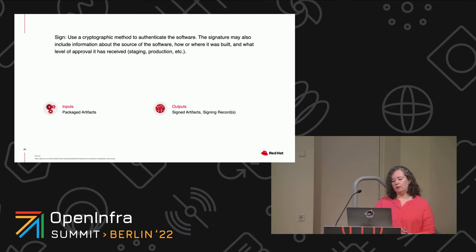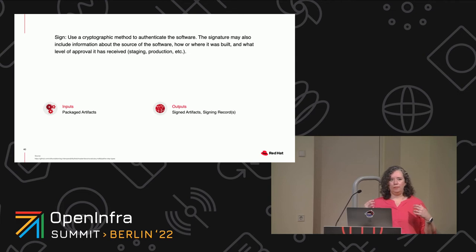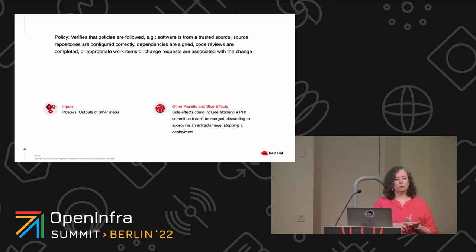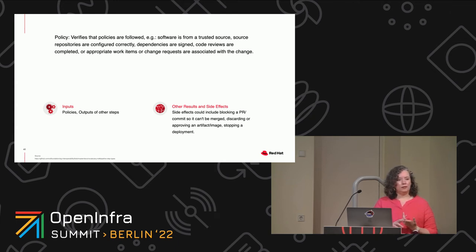When you sign, you're going to use a cryptographic method to authenticate the software. This might include information about the source of the software and how or where it was built — like it might say Anne Marie's pipeline version 2 is signing this — and what level of approval it has received. Then we have policy steps — these verify that corporate policies are followed. For example, you might have a policy that software has to come from a trusted source like an internal repository, or you might verify that your source repositories are configured correctly. You might configure GitHub to require that a second person has reviewed and approved every single change so you can't merge your own code. You can check that your dependencies are signed, that code reviews have been completed, or that appropriate work items or change requests are associated with the change and approved.